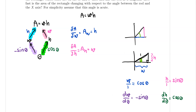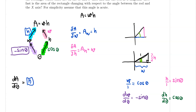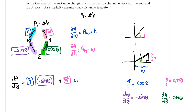Now I combine everything. dA/dθ equals the blue number h times the purple number negative sine theta, plus the pink number w times the green number cosine theta. So dA/dθ = h·(−sin θ) + w·cos θ.